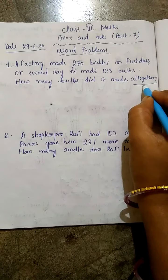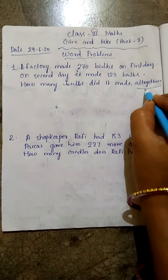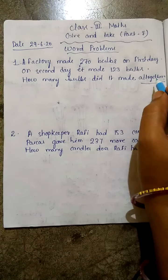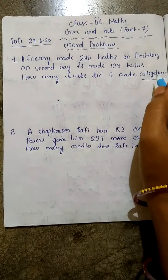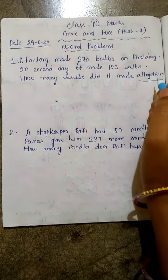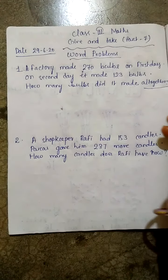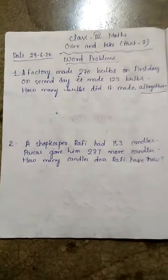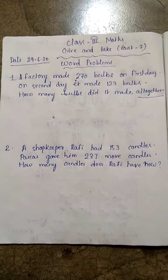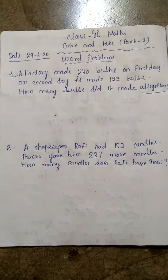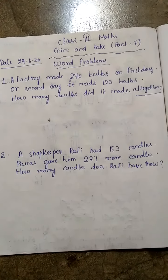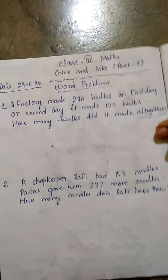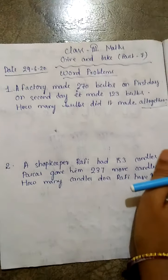यहां पर देखिए बच्चों, यहां पर आपको clue मिल जाएगा — 'altogether', 'in total' — यह सब का मतलब होता है कि हमें क्या करना होगा? हमें add करके इसका value calculate करनी होगी।